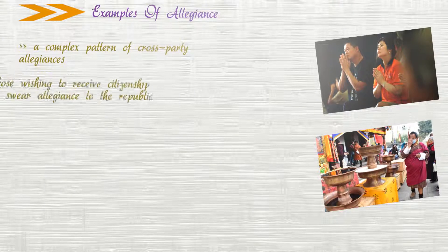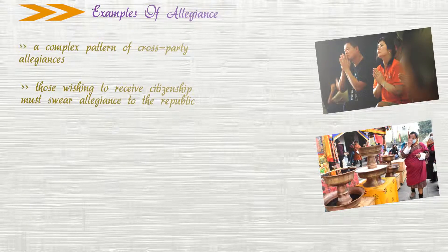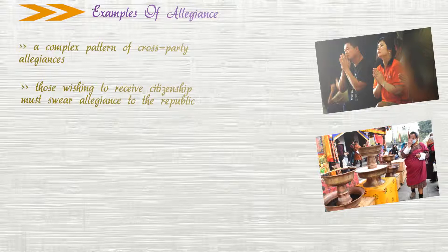These are a few examples you usually encounter in relation to allegiance. We should get to know more about each of these examples in some other sessions. A complex pattern of cross-party allegiances. Consequently, those wishing to receive citizenship must swear allegiance to the Republic.